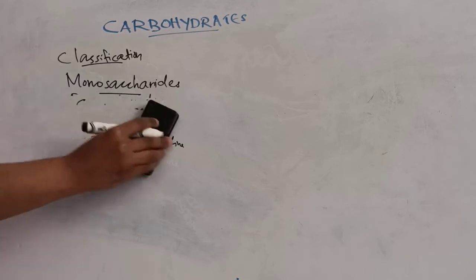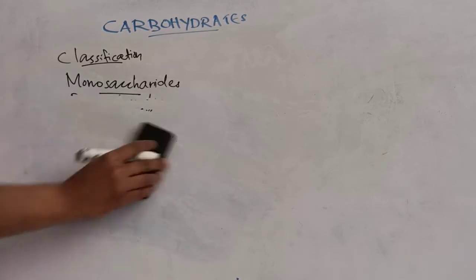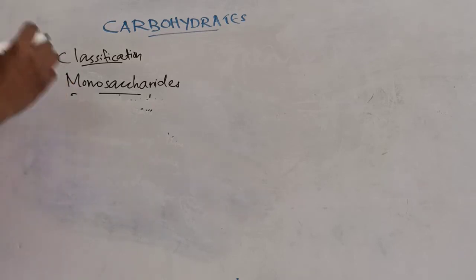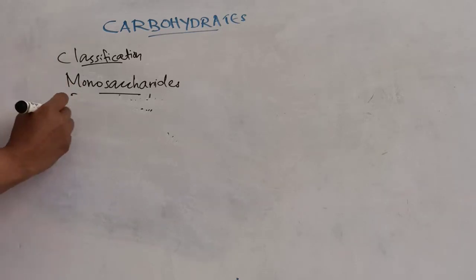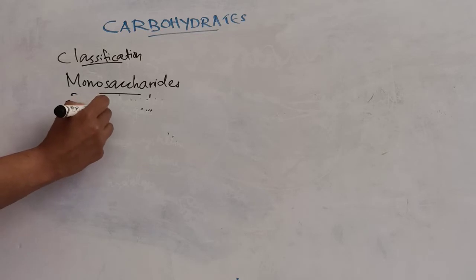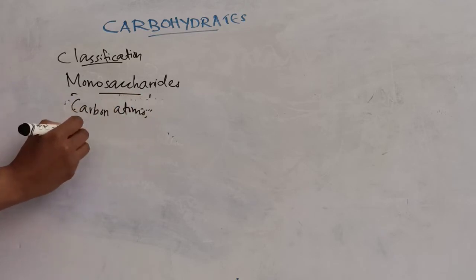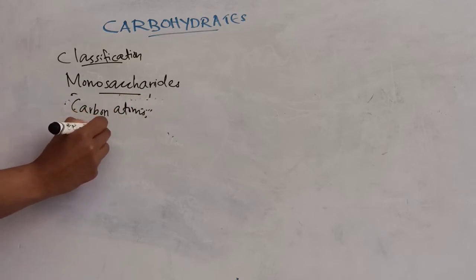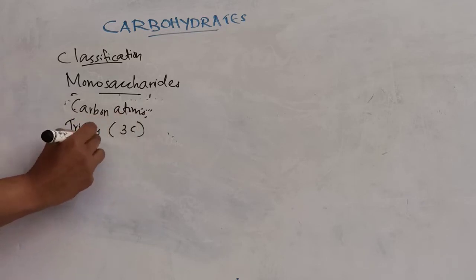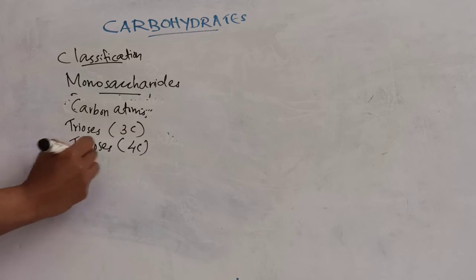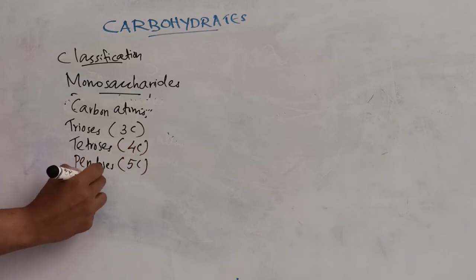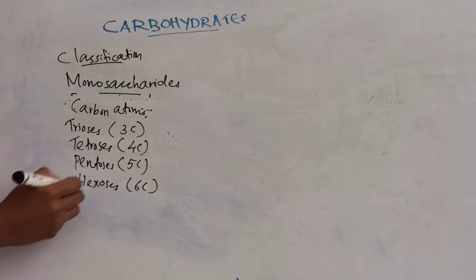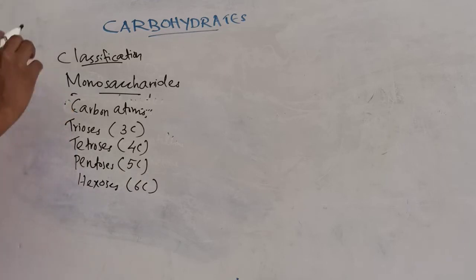Depending upon the number of carbon atoms, monosaccharides are subdivided into trioses (3 carbons), tetroses (4 carbons), pentoses (5 carbons), hexoses (6 carbons), and so on.